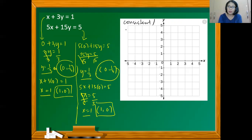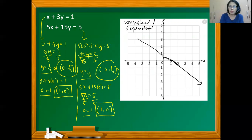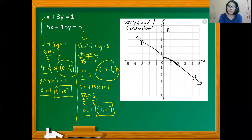Since the intercepts are the same, the lines coincide. We plot (0, ⅓) and (1, 0), and both equations produce the same line since they have the same x and y-intercepts — they are equivalent equations. Therefore, the solution is infinite.